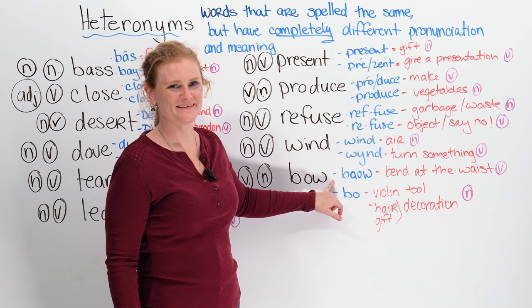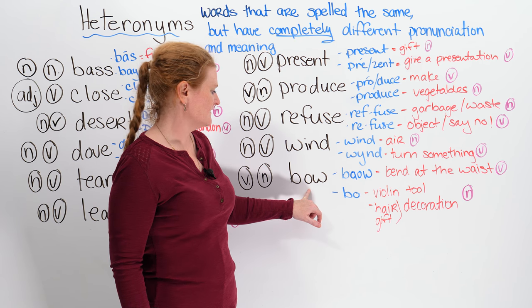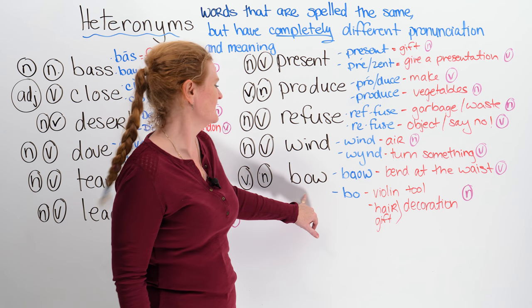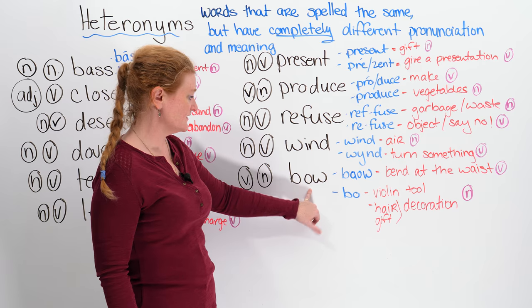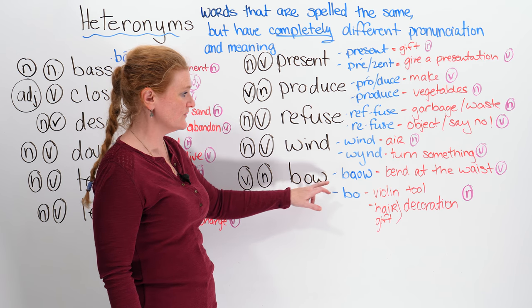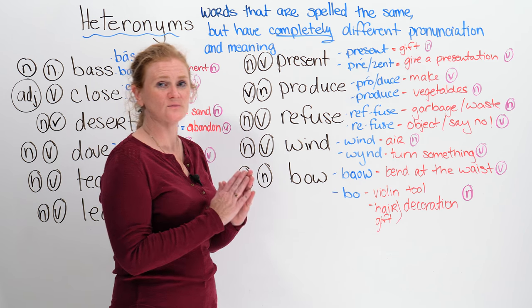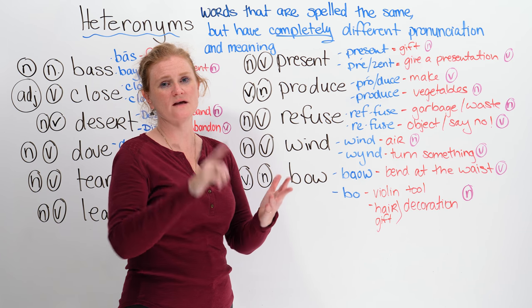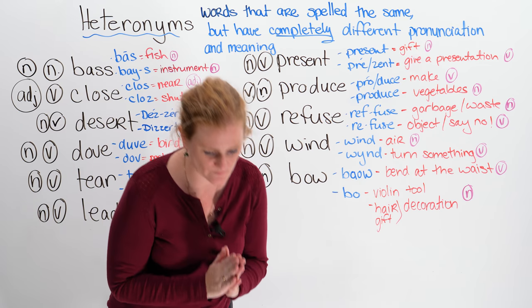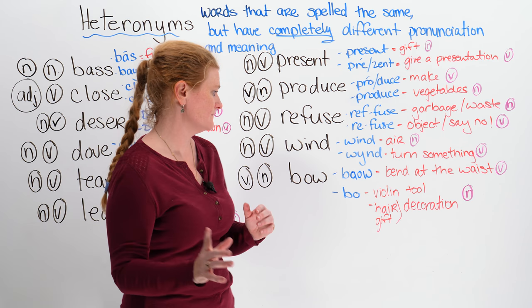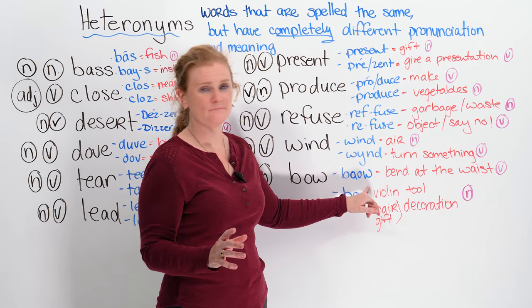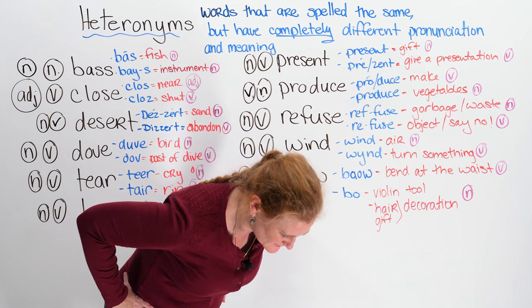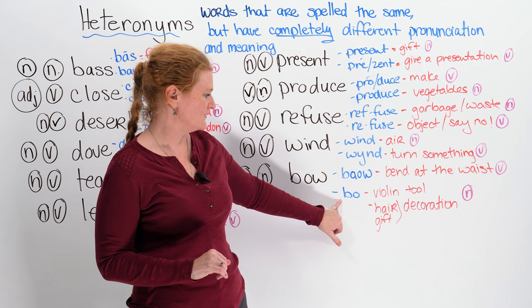We're almost to the end. Are you happy? Are you amazed and interested of how crazy English is? The last word is this word, B-O-W. As a verb, you bend at the waist. So, we bow. If you are from Japan or Korea, you usually bow to pay respects to people. We don't do that. We don't respect people here, but bow means you bend at the waist.